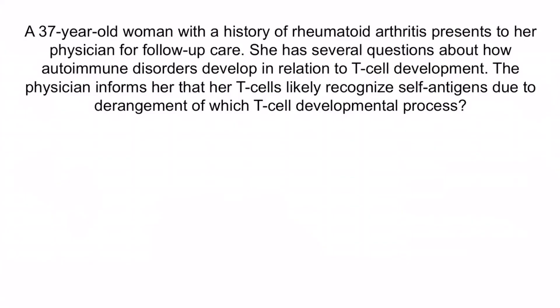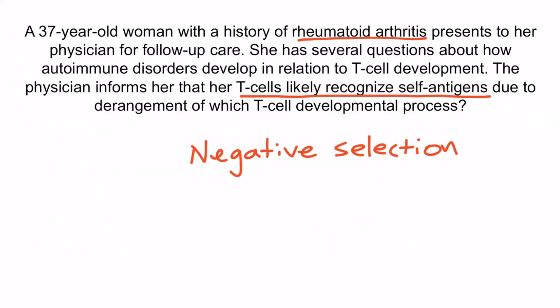Let's review with a question. A 37-year-old woman with a history of rheumatoid arthritis presents to her physician for follow-up care. She has questions about how autoimmune disorders develop in relation to T-cell development. The physician informs her that her T-cells likely recognize self-antigens due to derangement of which T-cell developmental process? Recall that these T-cells are normally destroyed during negative selection, so derangement of negative selection is the correct answer. If negative selection is impaired, patients can end up with autoimmune disorders because T-cells will mount an immune response against self-antigens.